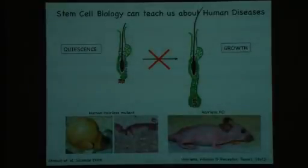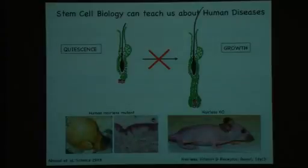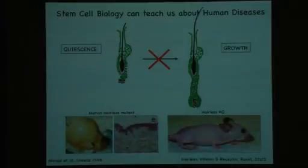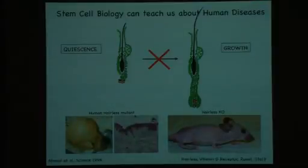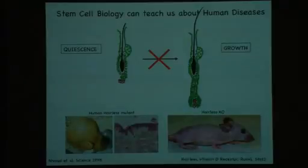Just to show you that studying stem cell biology using the hair follicle can have an impact on human disease: Angela Cristiano has recently mapped the gene Hairless, which when mutated gives rise to alopecia. When you mutate the same gene in mice, you recapitulate the same phenotype. This shows that understanding basic principles of stem cell biology can teach us about human diseases.